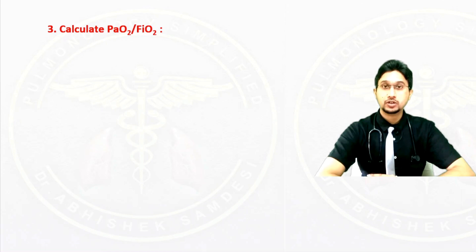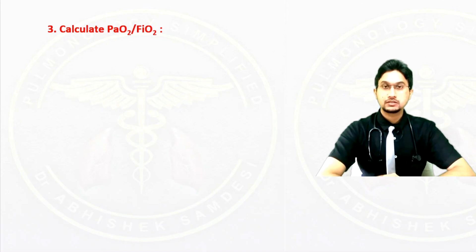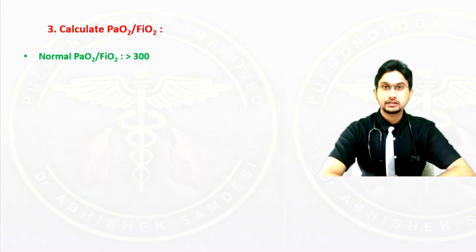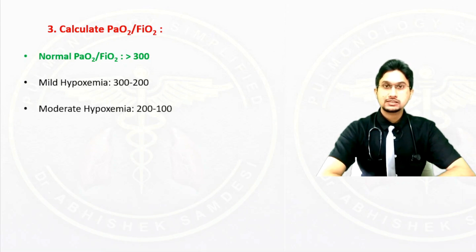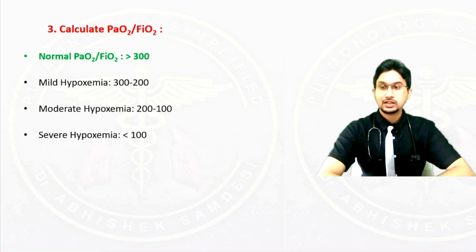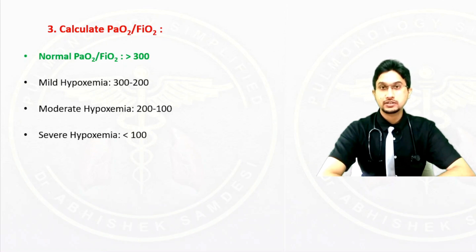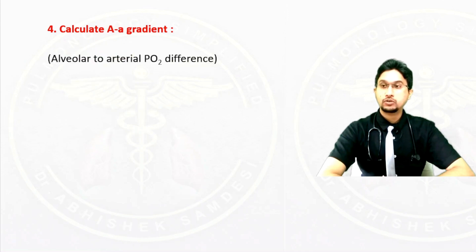One of the most important formulas frequently used in the ICU to assess oxygenation status is the P/F ratio, or PaO2 divided by FiO2. This gives an idea of oxygenation status by dividing the partial pressure of oxygen from the ABG by the FiO2 provided via the oxygen delivery device. The normal P/F ratio is more than 300. Between 300 and 200 is mild hypoxemia, between 200 and 100 is moderate hypoxemia, and less than 100 is severe hypoxemia.